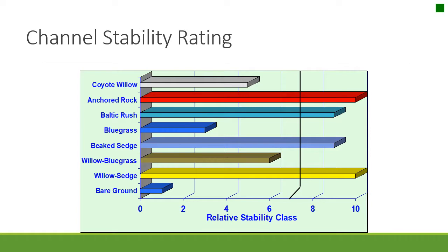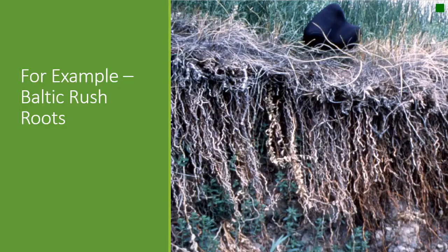This graph shows how root length and mass can really come together to improve channel stability and the sinuosity of creeks. You can see how much higher some of these rate in channel stability ratings — anchored rock is up there in red, but willow sedge, beaked sedge, and Baltic rush have extremely high channel stability ratings. That's why they're underrated, and people should definitely consider them more. Looking at Baltic rush roots, you can tell the bank is going to be held together extremely well as long as you can keep the Baltic rush thriving.